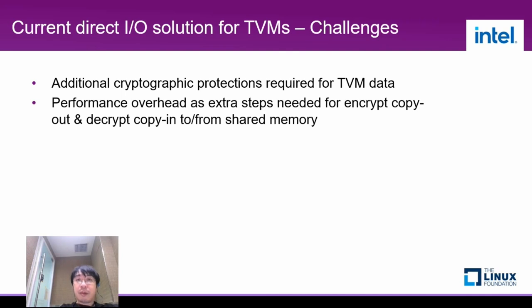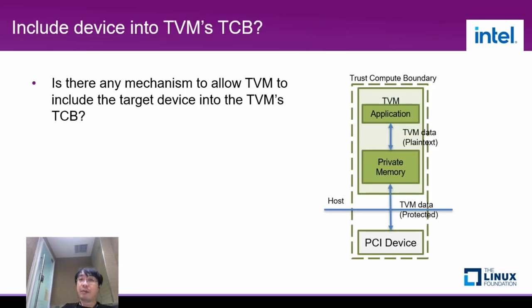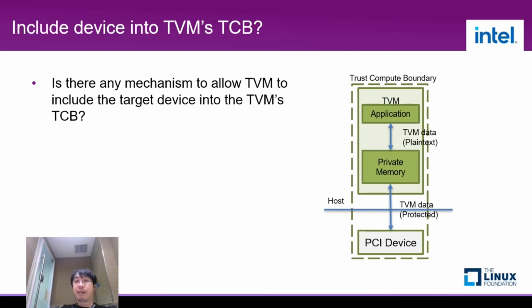Challenges. As current architecture and the working model requires additional cryptographic protections, this brings additional complexity. And we will have significant performance overhead due to the extra steps needed for encrypt-copy-out and decrypt-copy-in to and from shared memory. Is it possible to have some security mechanism to allow the TVM to include the target device into its TCB, so that the target device can access private memory directly to avoid the performance overhead from extra copies? The answer is yes. There is a new option we will discuss in the next part of this presentation.